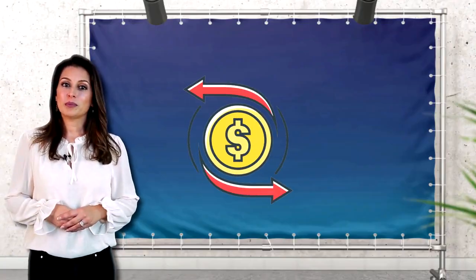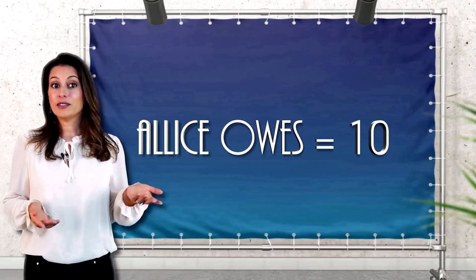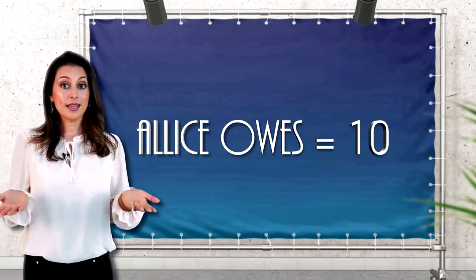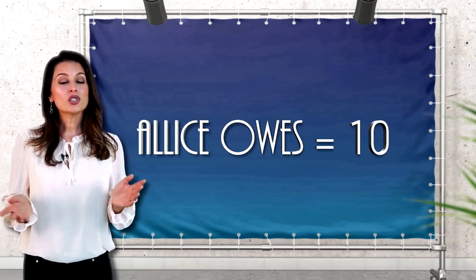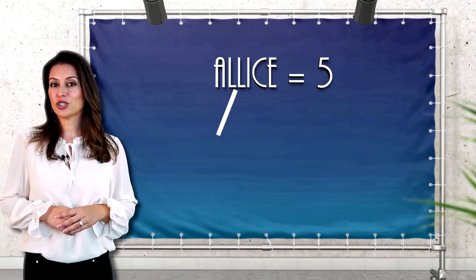The double spend problem is quite simple. Let's say Alice owes a debt of $5 to both Bob and Carol. Alice's total debt is $10, but let's assume she only has $5 currently.